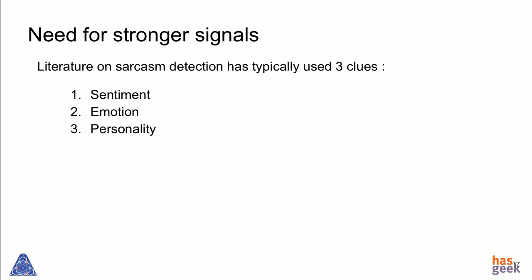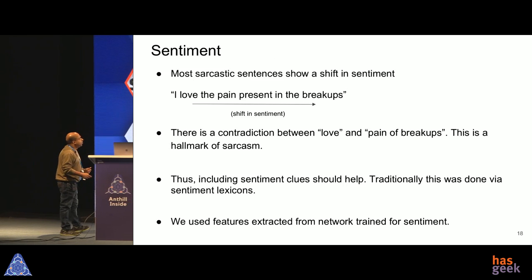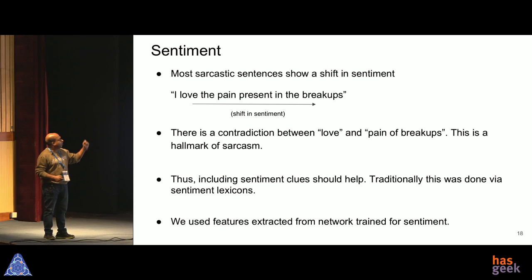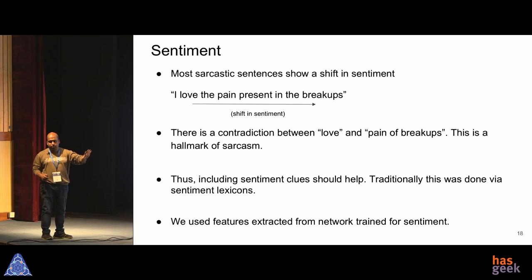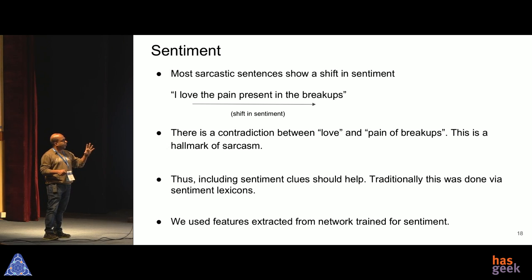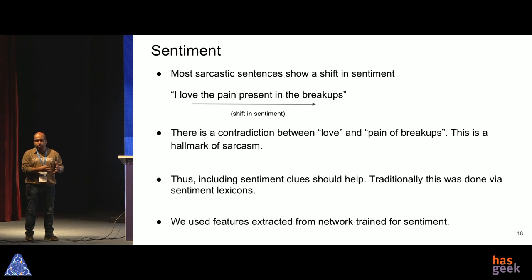Looking at literature, people have strongly identified three clues for sarcasm detection: sentiment, emotion, and personality. For sentiment: most sarcastic sentences show a shift in sentiment. 'I love the pain of breakups' starts with a strong positive connotation — 'I love something' — but quickly shifts to a negative side. This contradiction between love and pain of breakups is a hallmark of sarcasm. The natural approach is to pick sentiment clues and use them as input to the sarcasm model.